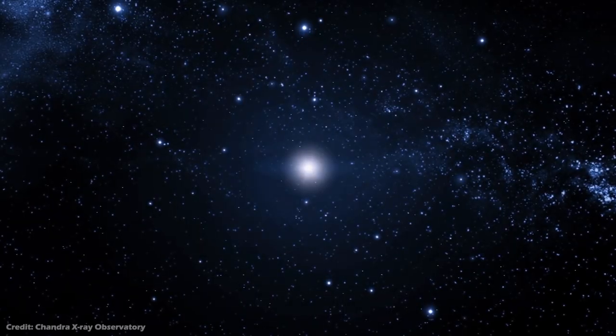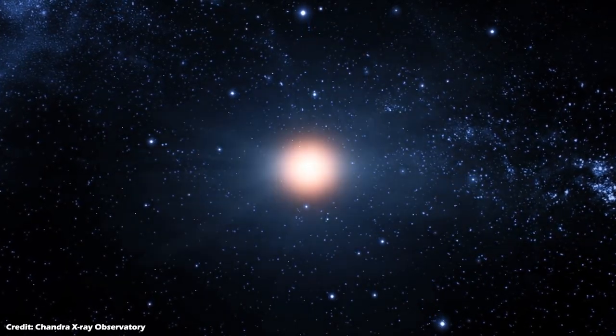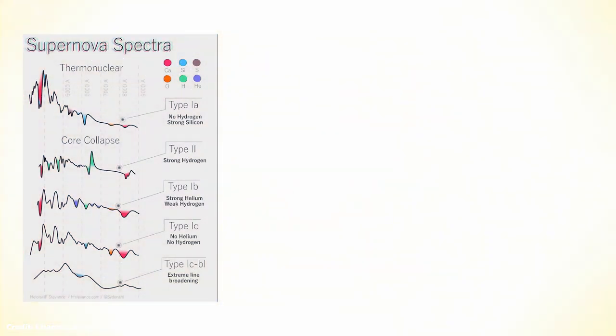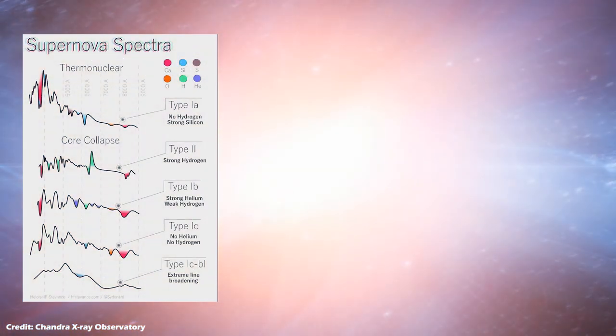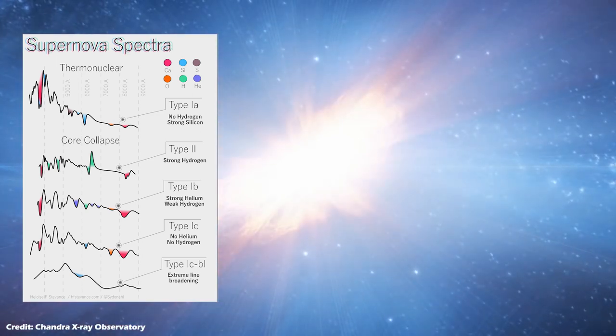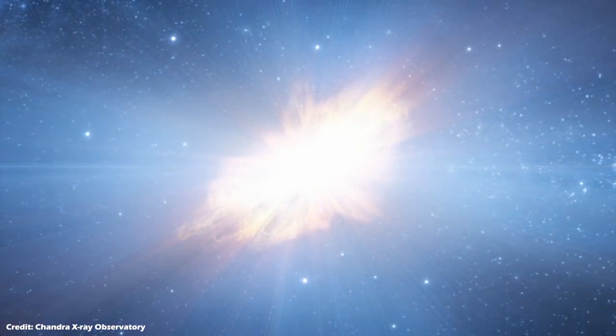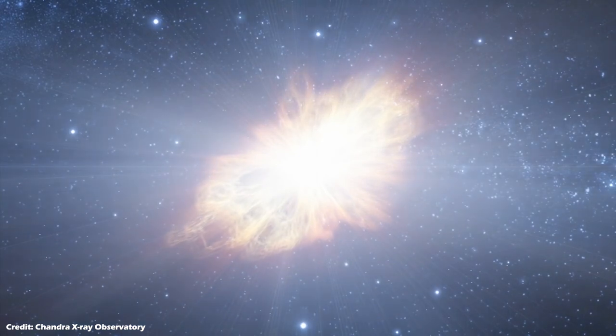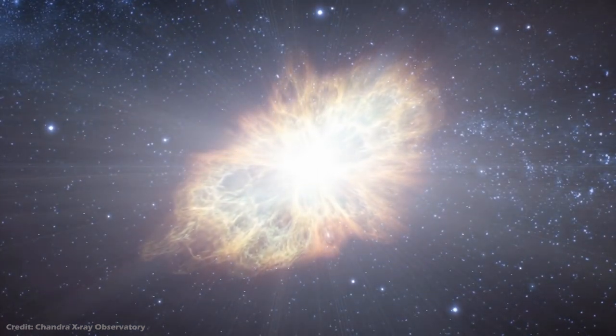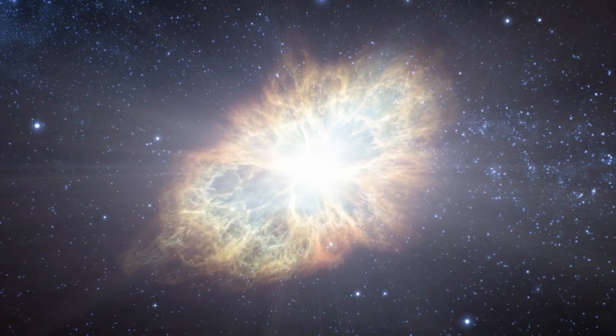Whenever a supernova goes off, astronomers point their telescopes at it to study its spectrum and see how the light eventually fades with time. This helps them determine the type of the supernova and the physics behind it. In the case of the supernova 1054, astronomers had to piece together the evidence that was left behind from the supernova to determine its type.